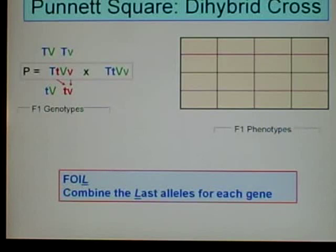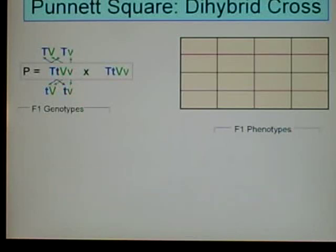Then finally, L for last. Combine the last alleles for each gene. The last allele of the Ts is the little T. The last allele for the Vs is the little V. So that's what we end up with. Big T, big V, that's a possible gamete. Big T, little V, that's a possible gamete. Little T, big V, that's a possible gamete. And little T, little V, that's a possible gamete for the first parent.